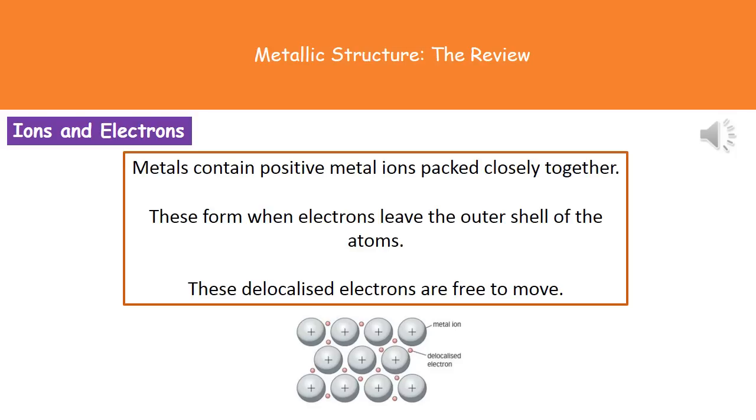If we look at the structure in a little bit more detail we've got a picture at the bottom there that shows us what we're talking about. So those grey circles with the pluses in then are the metal ions and metal ions have a positive charge hence the plus. And the little red circles around them are what's called a delocalised electron. So electrons remember have a negative charge and the delocalised just means that they're not held in any fixed position.